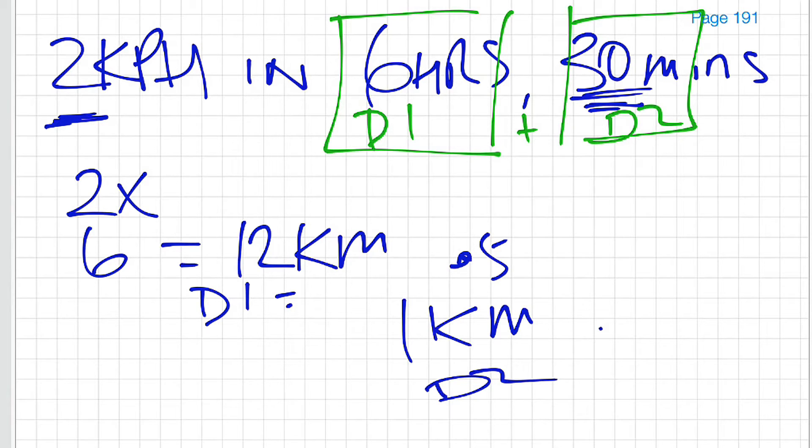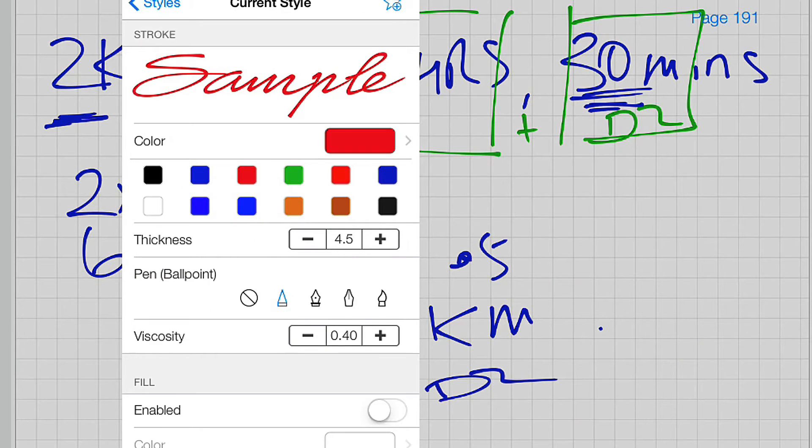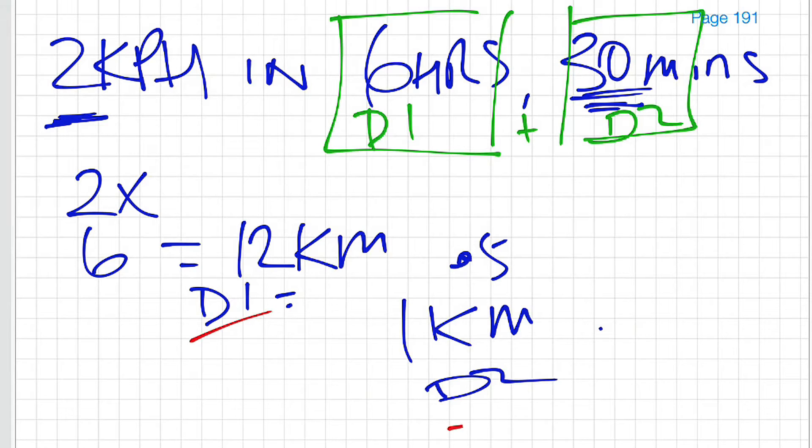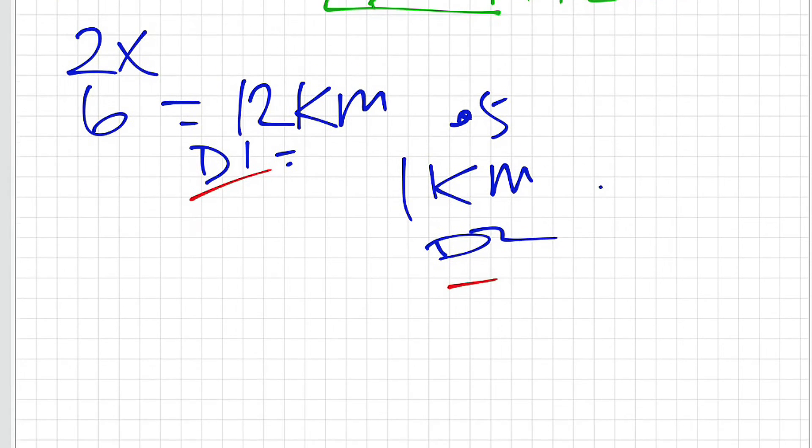That becomes my D2. When I add my D1, the 12, and the D2 together, it's pretty straightforward. I end up with 13 kilometres in total, which is the distance we were looking for.